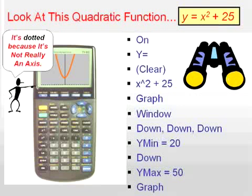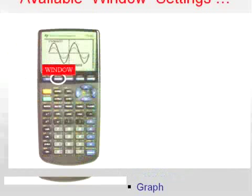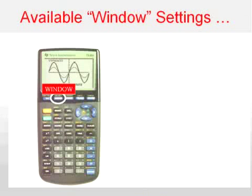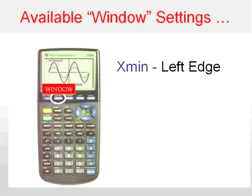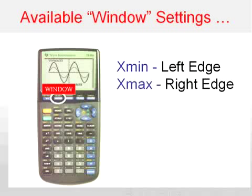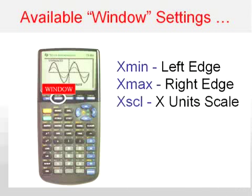Now what are these things in the window button? What you have available to you is the x-min, that's the left edge of your window, the x-max, that's the right edge, the x-scale, that's how wide you want your x units to be.